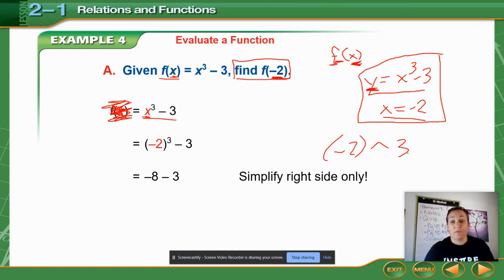And then, again, we're only simplifying the right-hand side. So these problems are essentially PEMDAS problems or simplifying problems. We are not solving an equation. So I got my answer as negative 11.